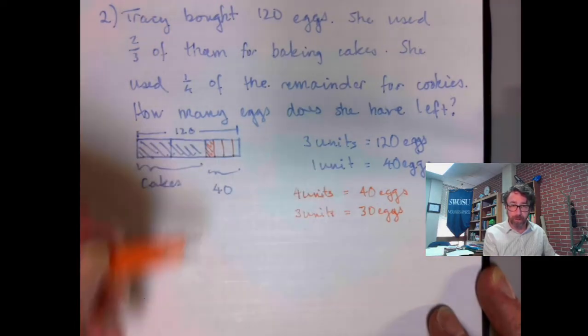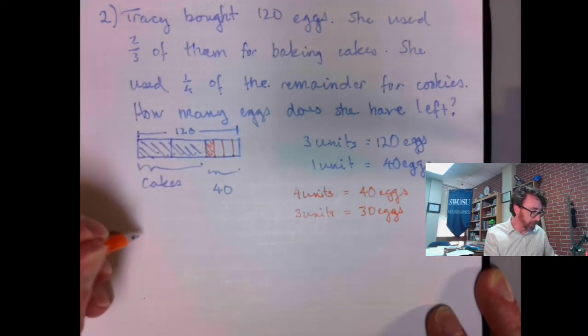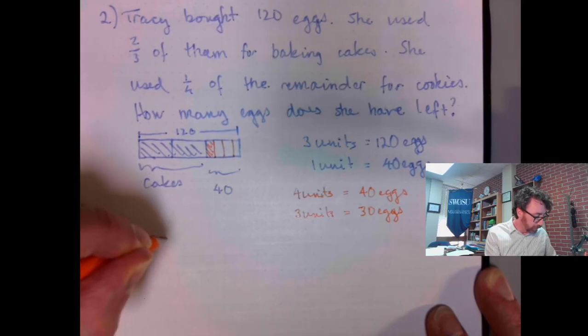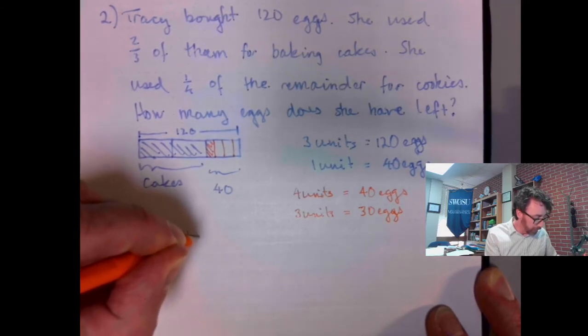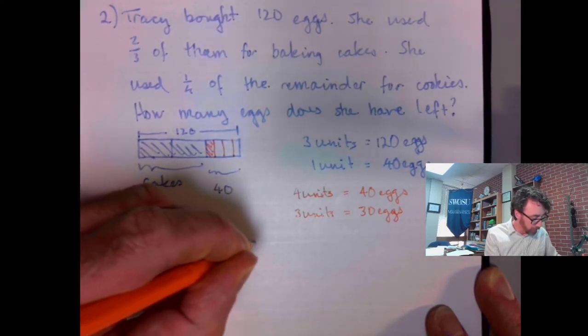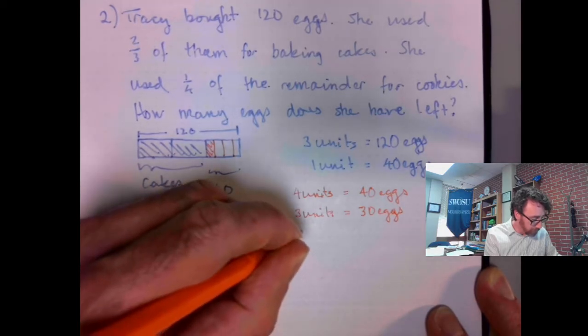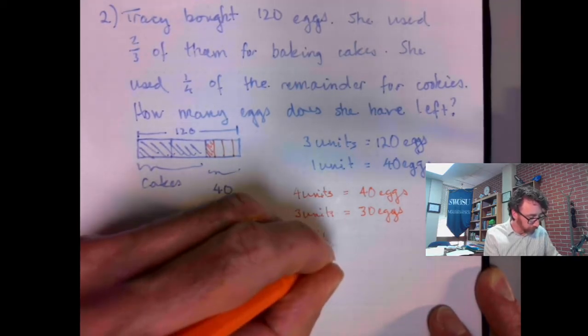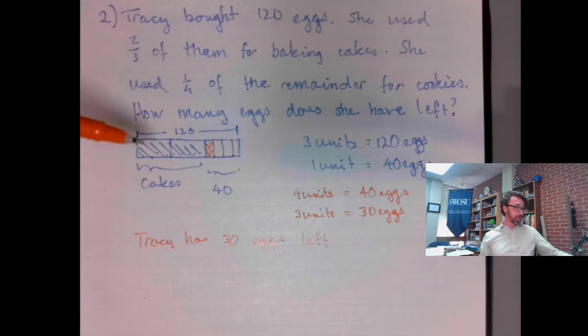Our computations are right there. And then we can have our sentence here. Tracy has 30 eggs left. We got our bar diagram, our computation, and our sentence.